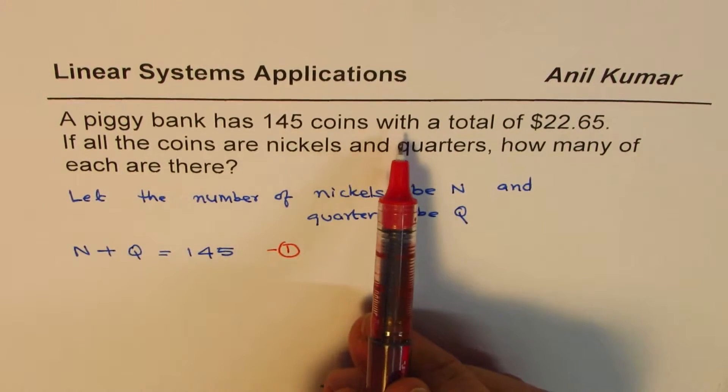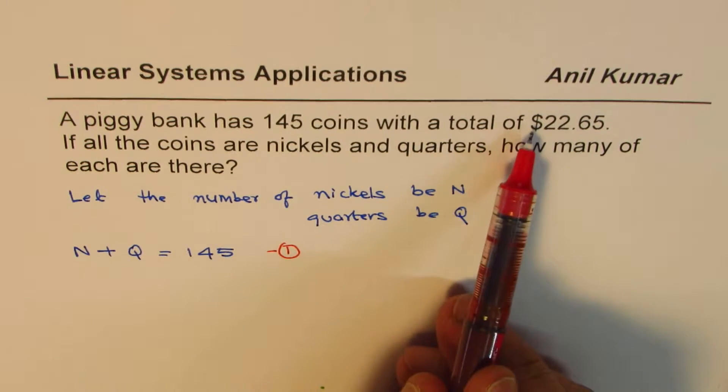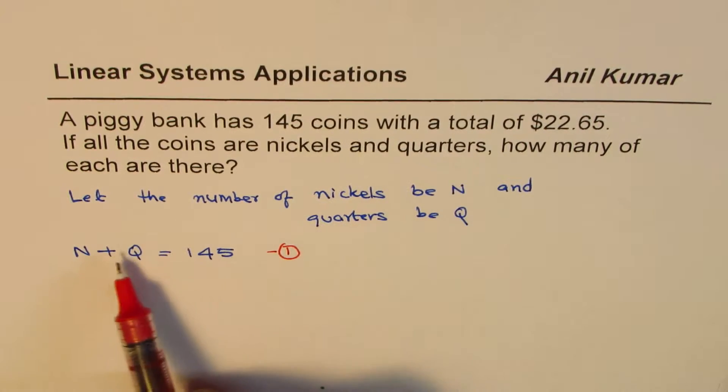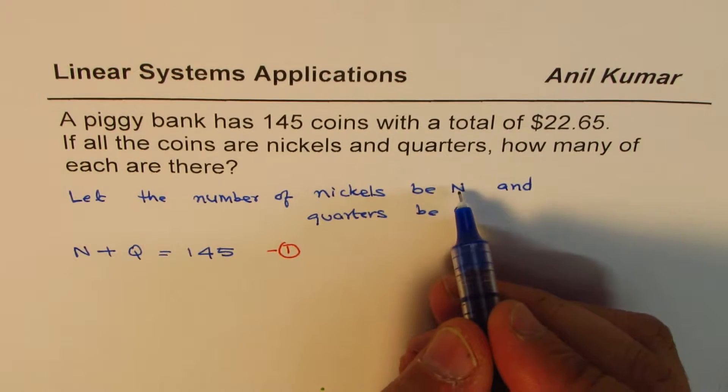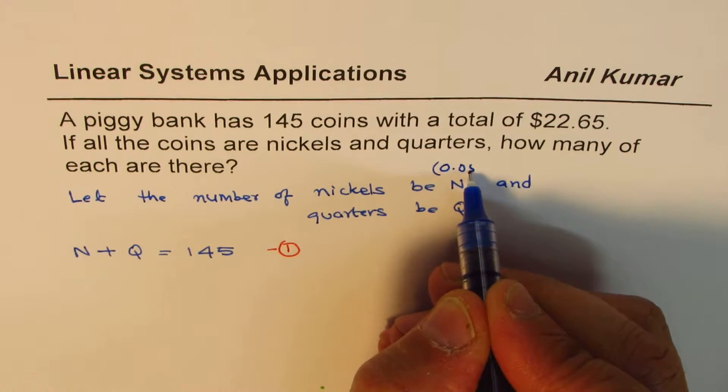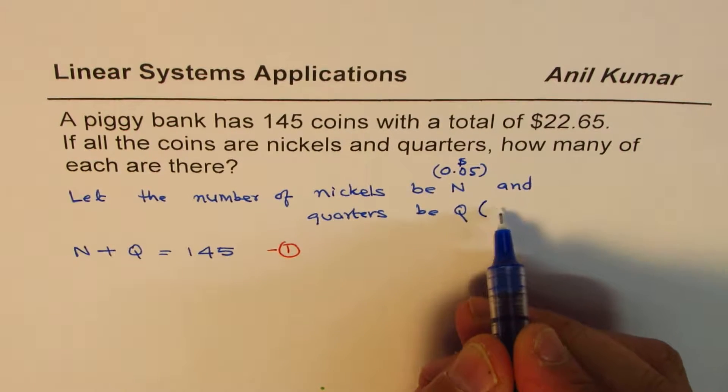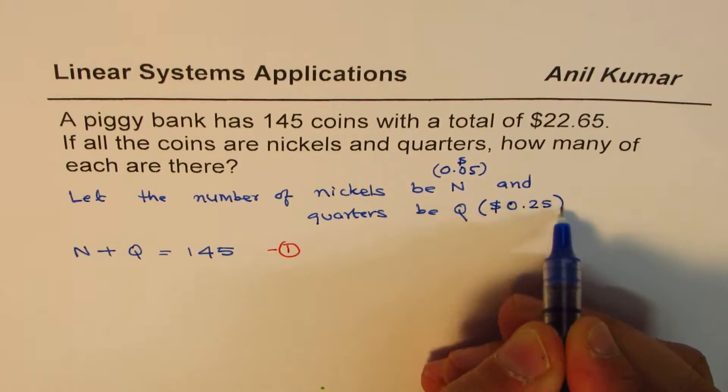Now it also says that a piggy bank has 145 coins with a total of $22.65. That means the value of all these coins is $22.65. Now what is the value of a nickel? Well, value of a nickel is 5 cents. So we could write this as 0.05 in dollars. Since this value is in dollars, N quarters is 25 cents or in dollars, we can write 0.25 dollars.